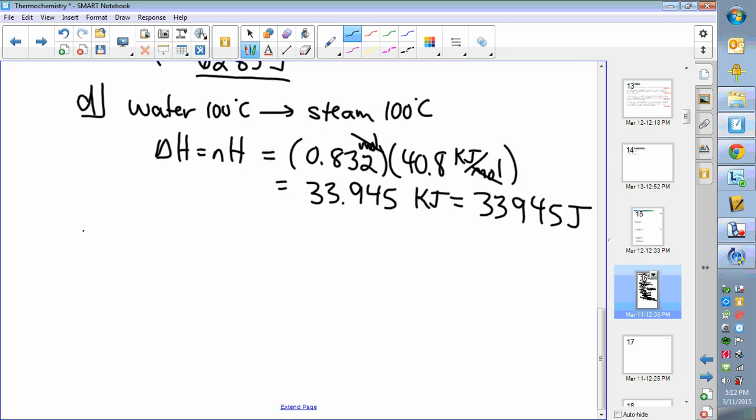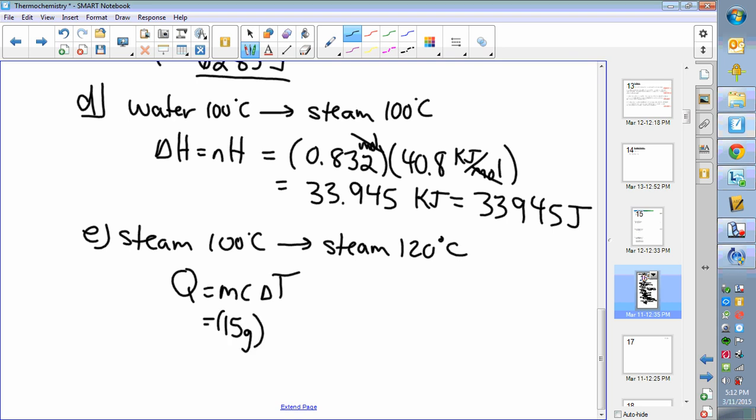Last step: we have steam at 100 degrees is going to become steam at 120, so we've got a temperature change question—mc delta t.